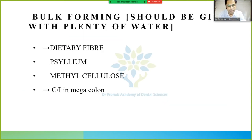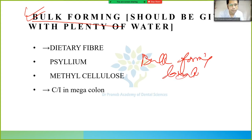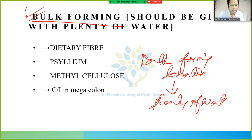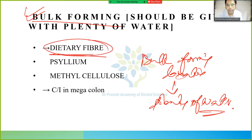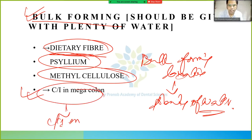Now the types of laxatives. First is bulk-forming laxatives — they should be given with plenty of water. Examples include dietary fiber, psyllium, and methylcellulose. Bulk-forming laxatives are contraindicated in megacolon.